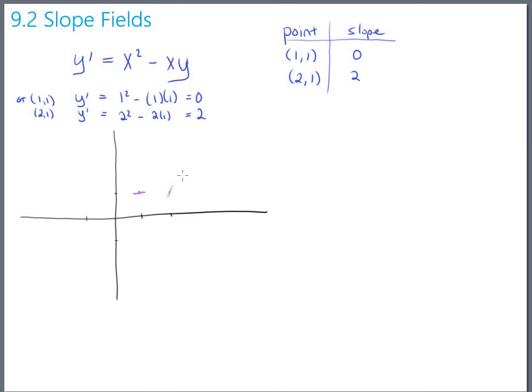And I can do this for a few more points. Let's maybe do, let's do zero, one. I don't know why all my y values are being one. It doesn't have to be that way. Okay, zero, one, so if you plug in zero, one, zero for x, you got a slope of zero. So I'll go ahead and plot that, and let me do a point that doesn't have a y-coordinate of one. How about, how about one, two?